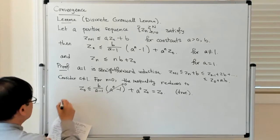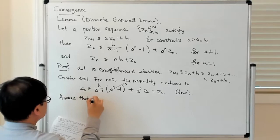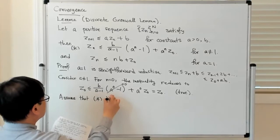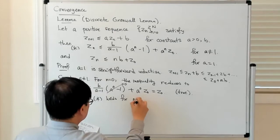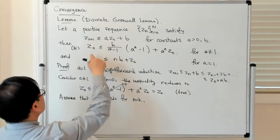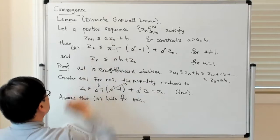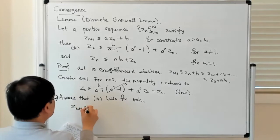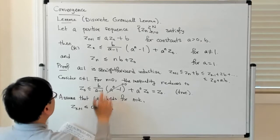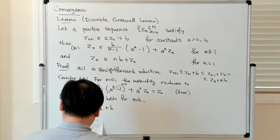Assume that this inequality holds for n equals k, and we want to establish it for n equals k+1. We use that this holds for n equals k, plus we use this inequality which always holds. So Z_{k+1} is less than or equal to AZ_k + B. We know Z_k satisfies this thing for n equals k.